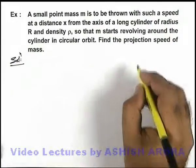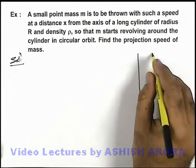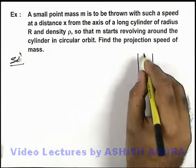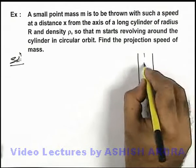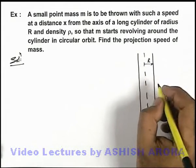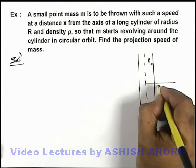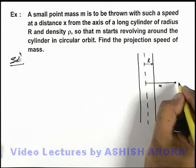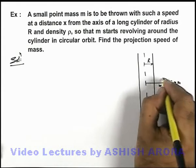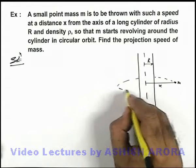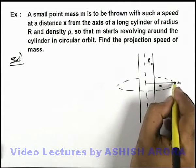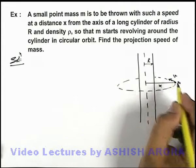In this situation, if we are given a long cylinder and this cylinder is of radius R, at a distance x outside from the axis, a mass m is projected in such a way that it starts orbiting around the cylinder. Say it is thrown with a speed v.